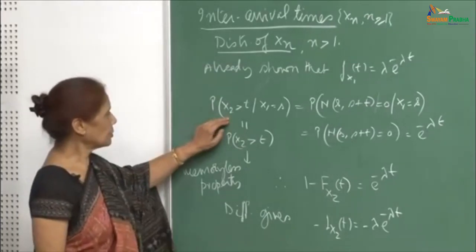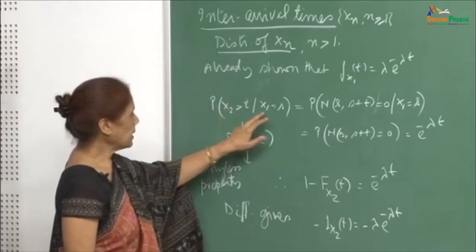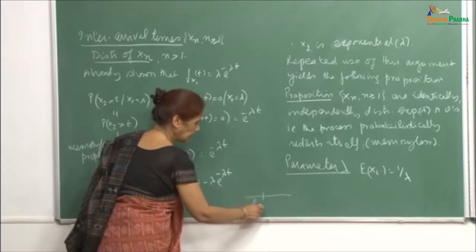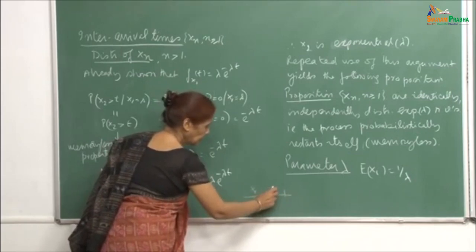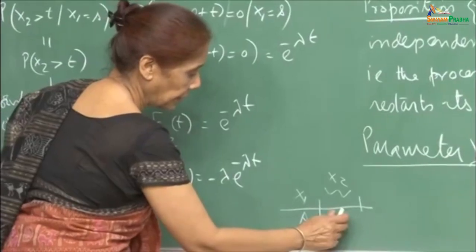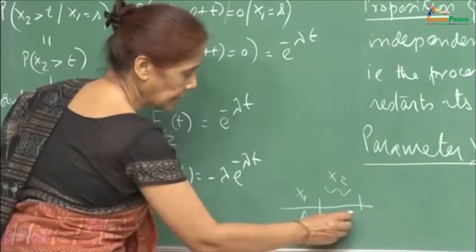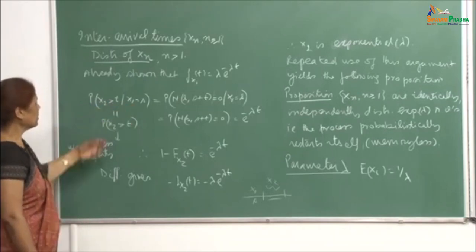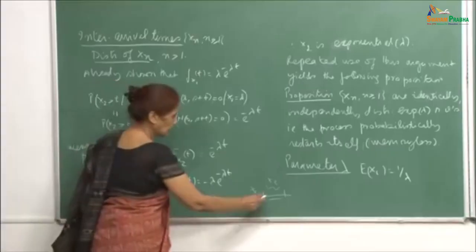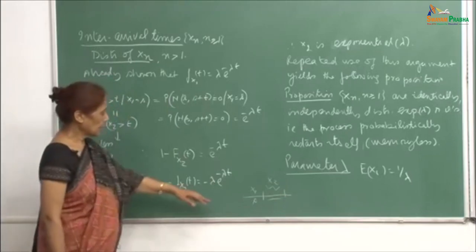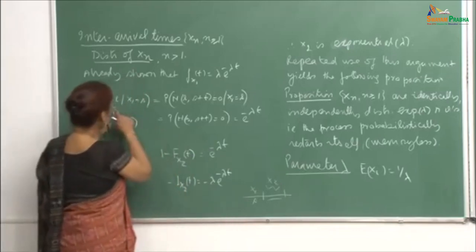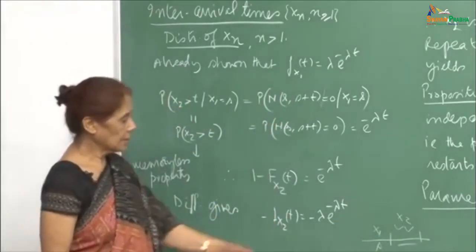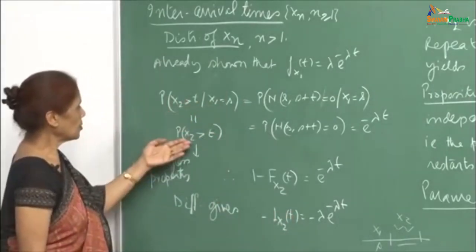Now, to compute the distribution for X2, we look at P(X2 > t | X1 = s). The first event occurred at time s, and we want this second interval to be greater than t, meaning no arrival occurs in this time. Since inter-arrival times are exponential and thus memoryless, this conditional probability is the same as P(X2 > t) — it does not matter when the first event took place.